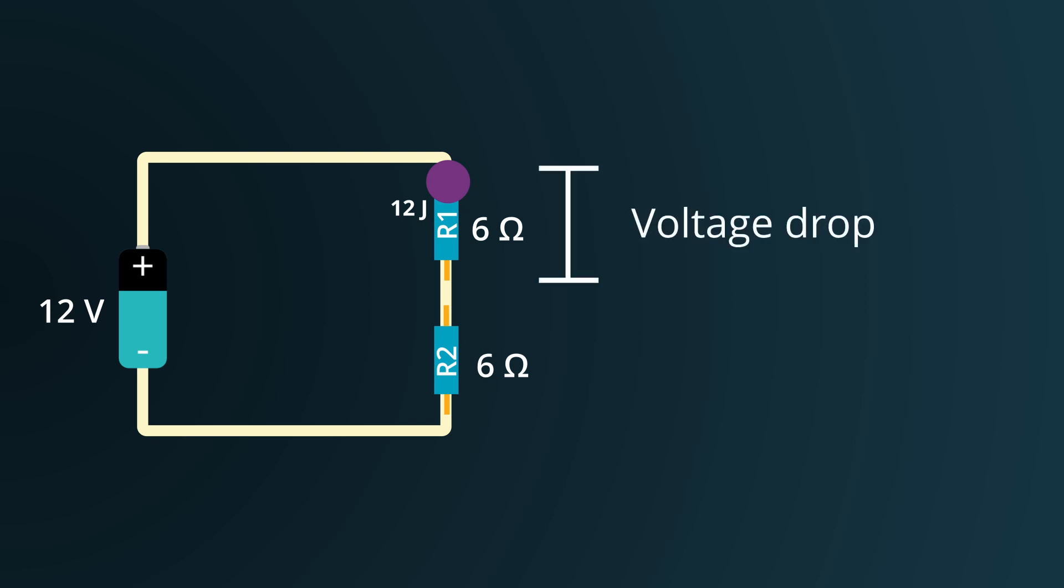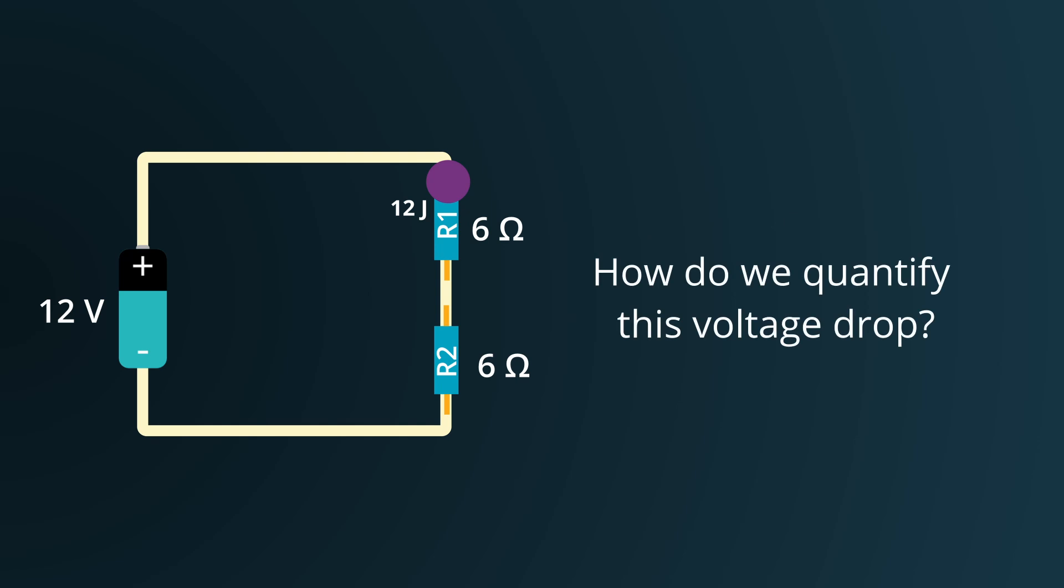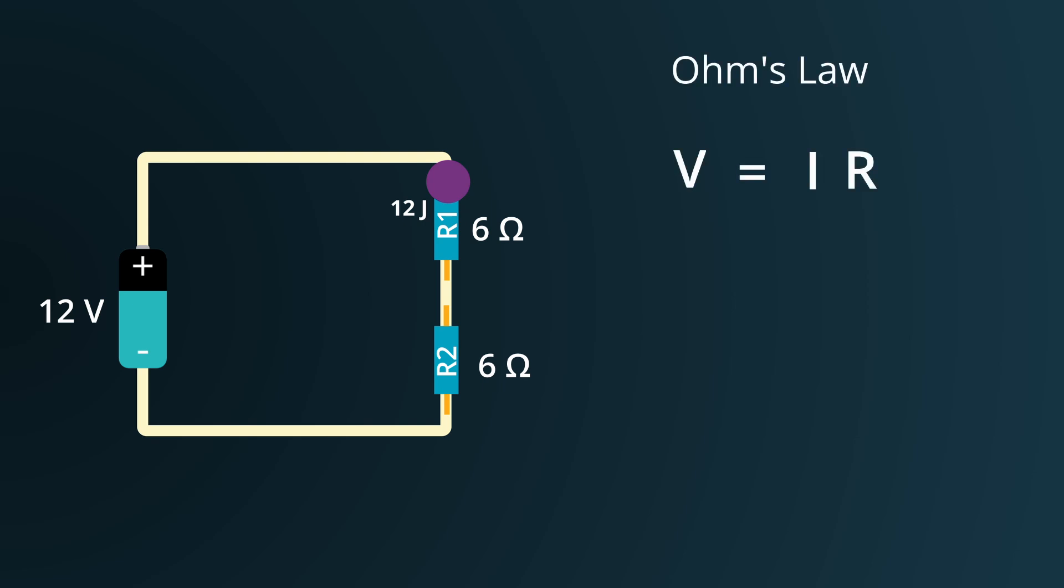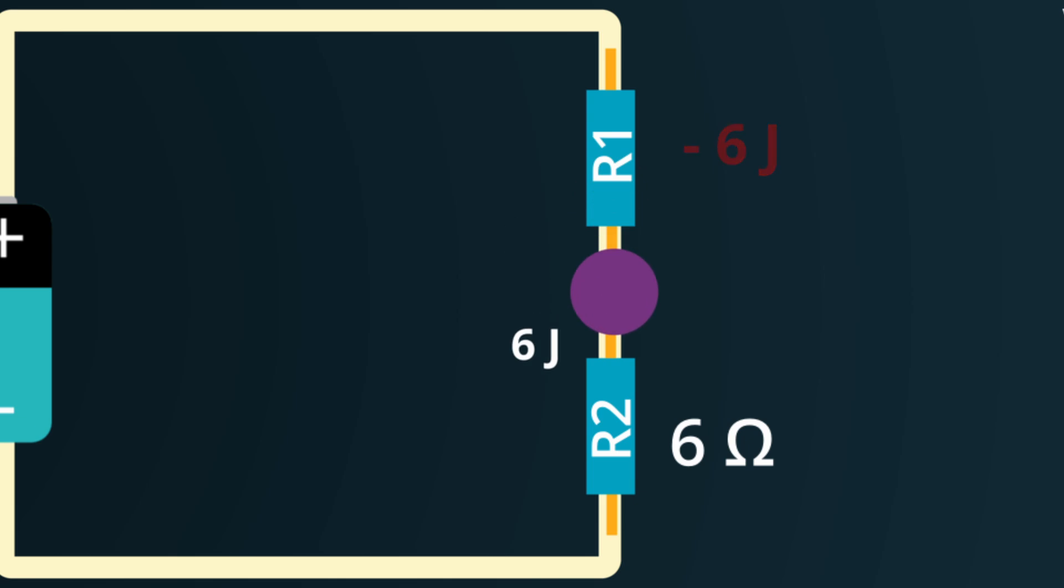Now the question is, how can we quantify this voltage drop? With our example in mind—12 volt battery and two 6 ohm resistors—we can use Ohm's law to calculate the current flowing in the circuit. Plugging in the values, we get a current of 1 ampere. Given that this is a series circuit, we know that the same current should flow throughout the entire circuit. Therefore, using this current and Ohm's law once more, the voltage drop over the first resistor calculates to be 6 volts. This means that a charge needs to spend 6 joules of energy to cross the resistor.